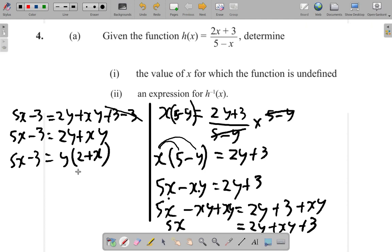Then I want y equal alone. So I get rid of 2 plus x. So 2 plus x divided by 2 plus x, and it leaves y alone. I must divide here by 2 plus x also. So I have 5x minus 3 over 2 plus x, over 2 plus x.